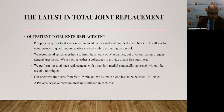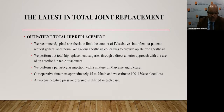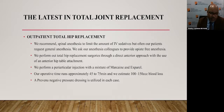We recommend spinal anesthesia to limit IV sedatives, but our patients often request general anesthesia, and we ask our anesthesia colleagues to provide opiate-free anesthesia as much as possible. We perform our total knee replacements with a standard medial parapatellar approach without a tourniquet. Our operative time runs from 50 to 75 minutes; we estimate blood loss between 100 and 200 cc. A Prevena negative pressure dressing is utilized in each case. For our total hip replacements, we again recommend spinal anesthesia but continue to ask anesthesiologists to limit opioids. We perform total hip replacements through a direct anterior approach with the anterior hip table attachment, with a periarticular injection of Marcaine and Exparel. Operative time runs 45 to 75 minutes, and estimated blood loss is approximately 100 to 150 cc.